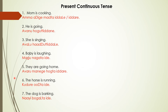The horse is running: kudure — kudure means horse, odu means run — kudure oodta idde. The dog is barking: naayi bogalta idde, or naayi bogalut idde. Both mean the same.